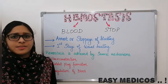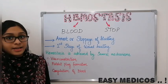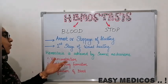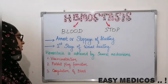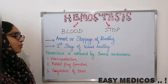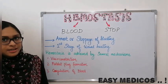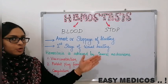Hemostasis is achieved by several mechanisms: Vasoconstriction, Platelet Blood Formation, and Coagulation of Blood. Then we will get to the next stage.